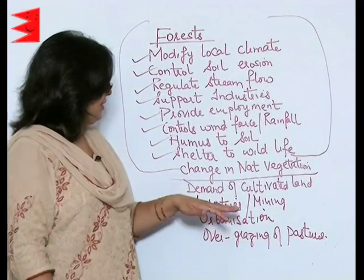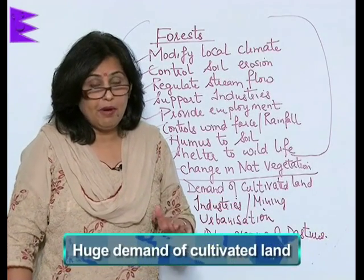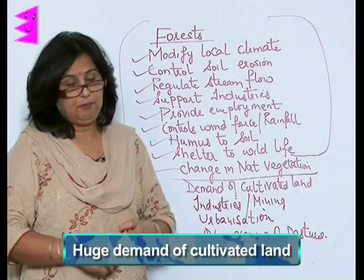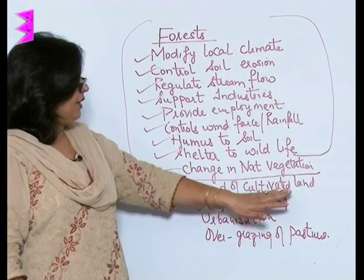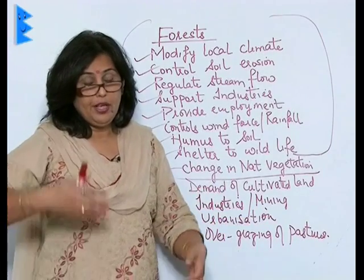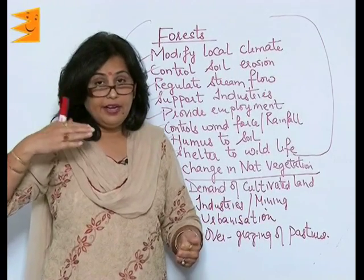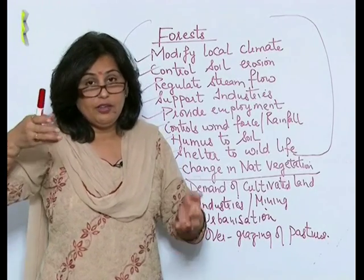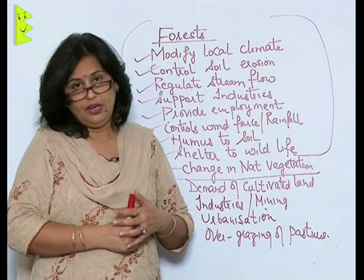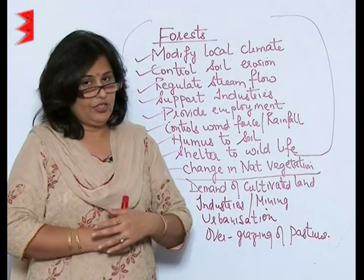The first reason is that there is a huge demand for cultivated land in India. As the demand for cultivated land increases, people are clearing natural vegetation for the growth of agriculture, thus changing the shape of natural vegetation.